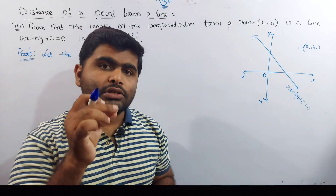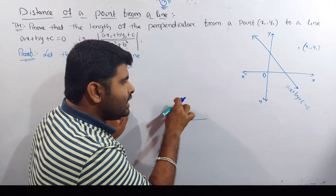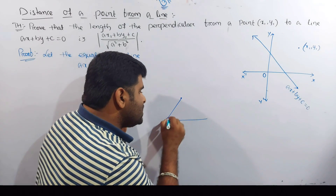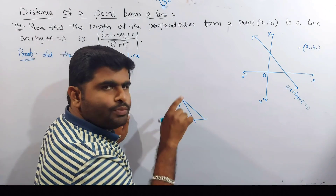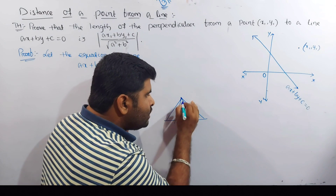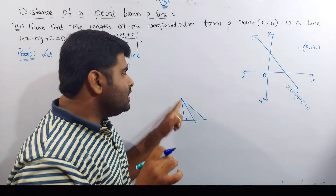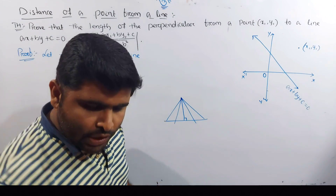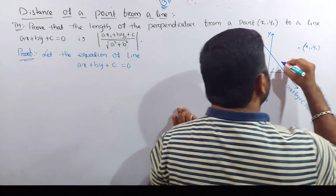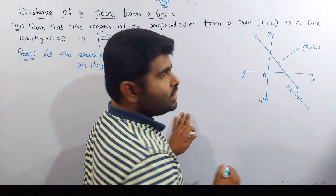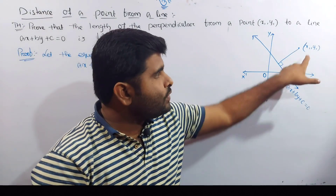Distance meaning is the shortest distance. This is the distance between this point to this line — the perpendicular line drawn from the point to the line.